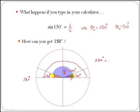In general, for any angle in the second quadrant, phi, we can write that phi is equal to 180 minus theta, where theta is an angle in the first quadrant.